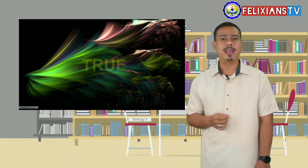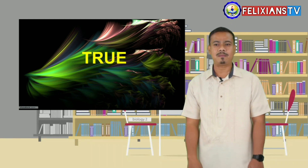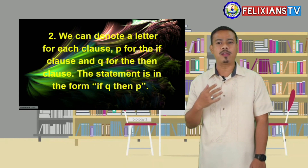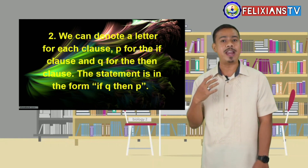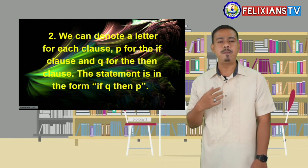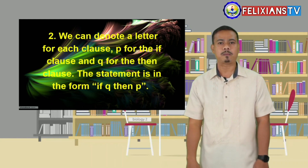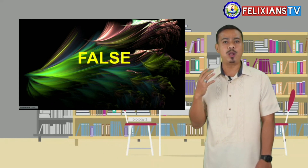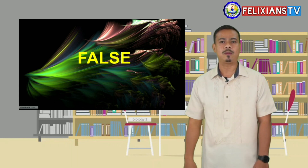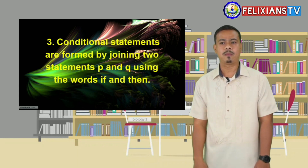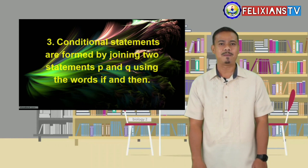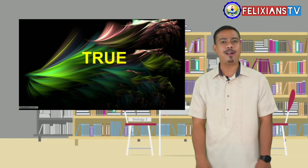You are correct! The answer is true. We can denote a letter for each clause — P for the if clause and Q for the then clause. The statement is in the form if Q, then P. You are correct! The answer is false because it should be if P, then Q. Conditional statements are formed by joining two statements P and Q using the words if and then. You are correct! The answer is true.